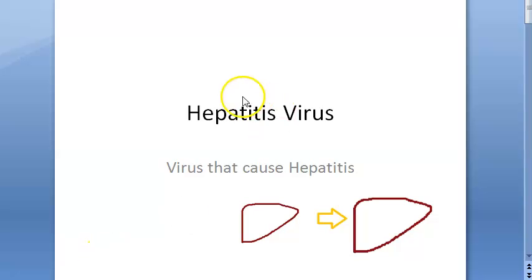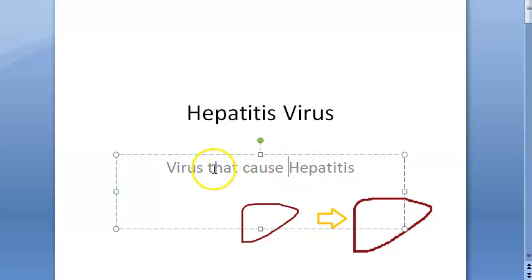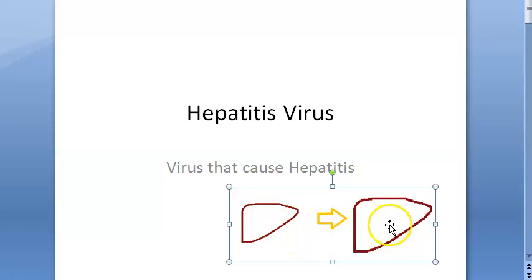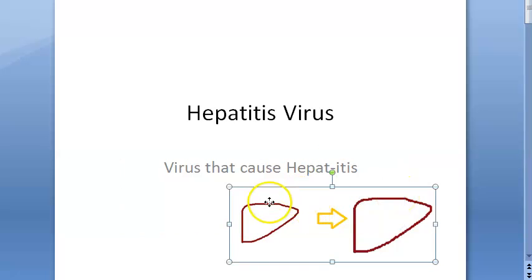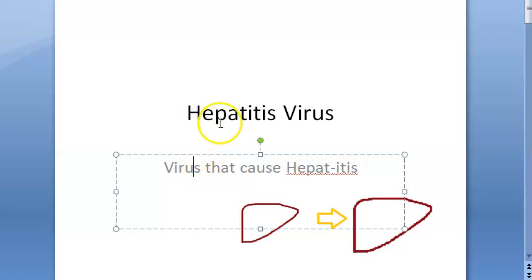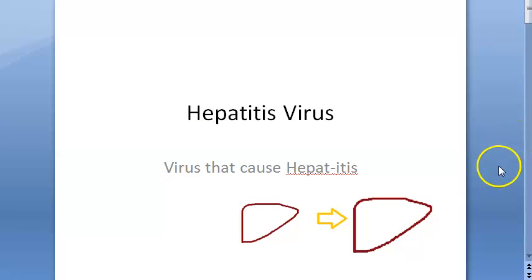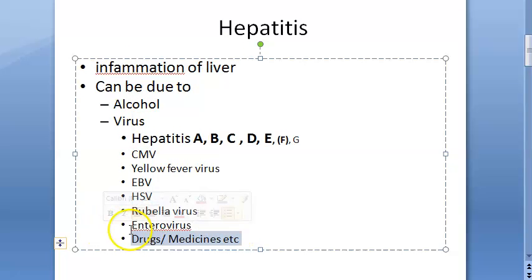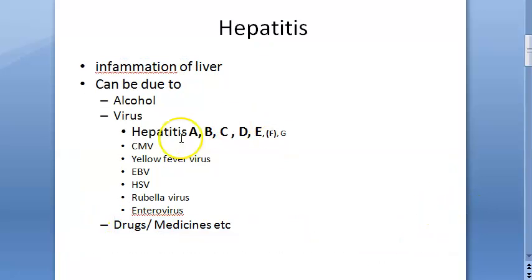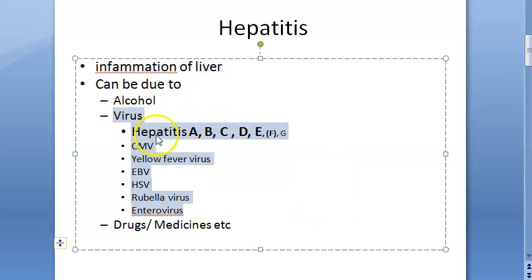Welcome. In this video, let us look at hepatitis viruses — viruses that cause hepatitis. Hepatitis is the inflammation of the liver. 'Hepatic' means liver, and 'itis' means inflammation. Hepatitis can be caused by alcohol, various viruses, or drugs and medicines.